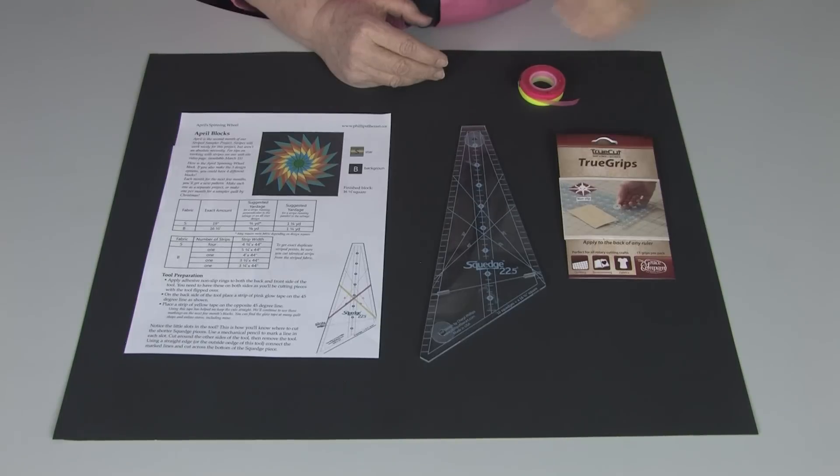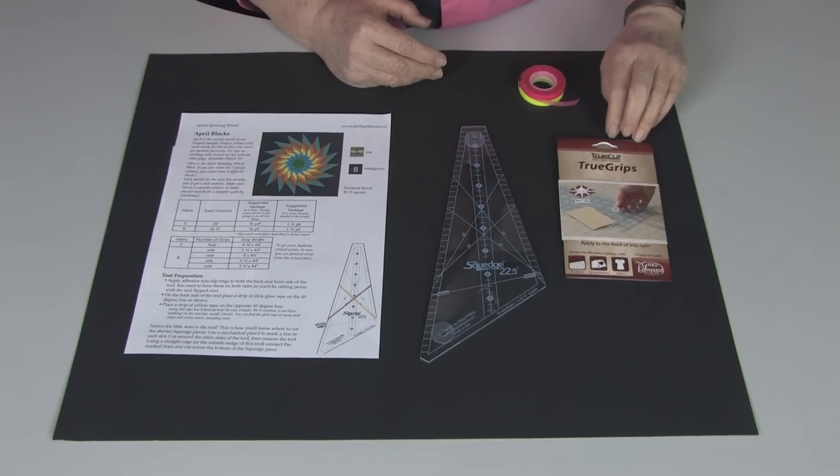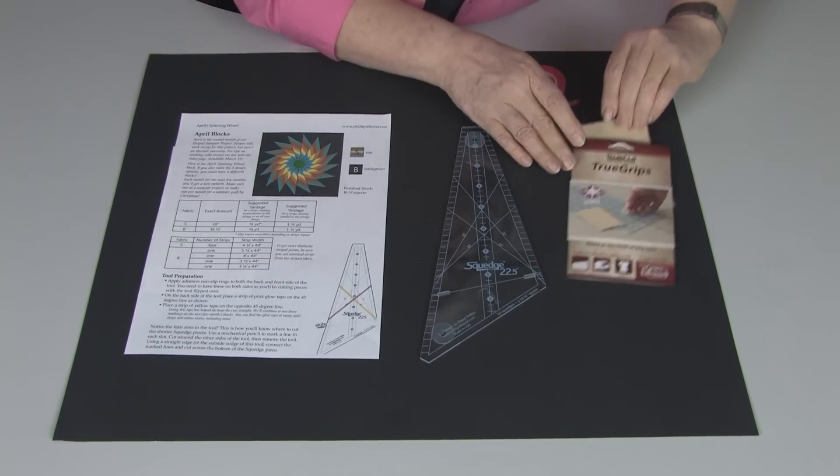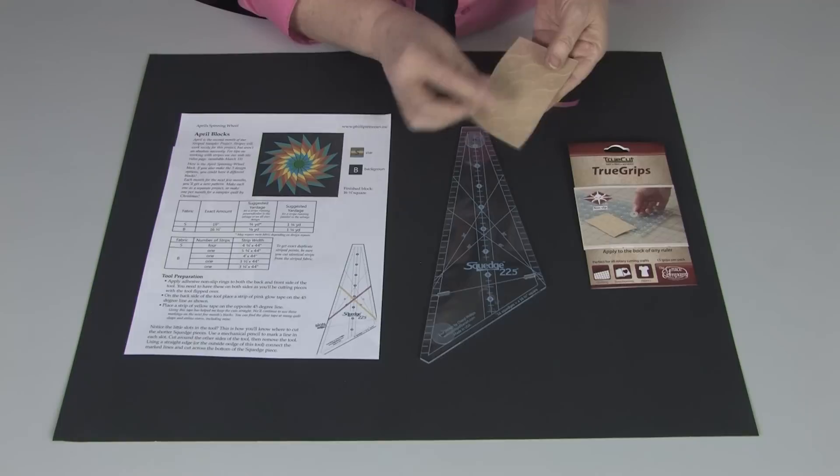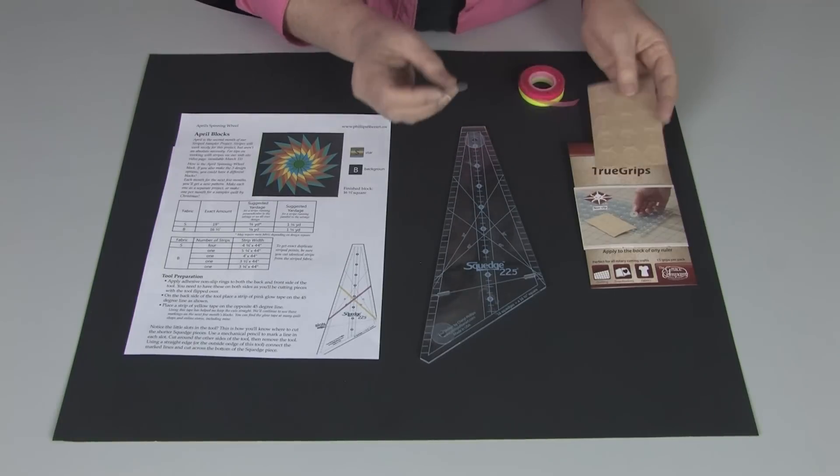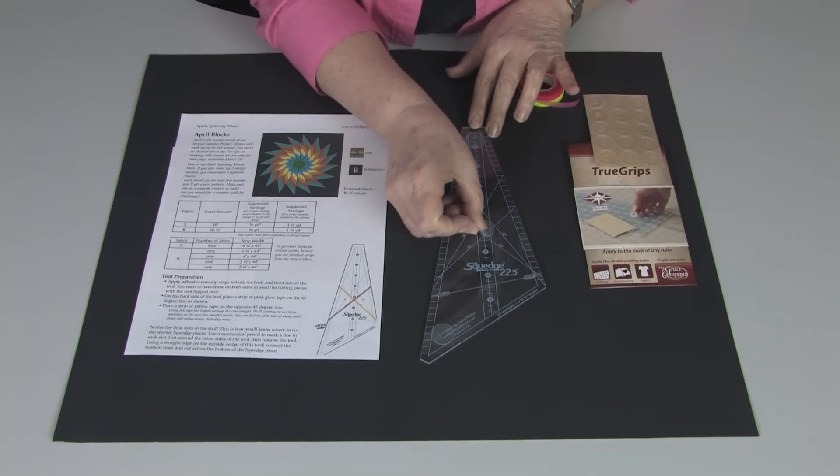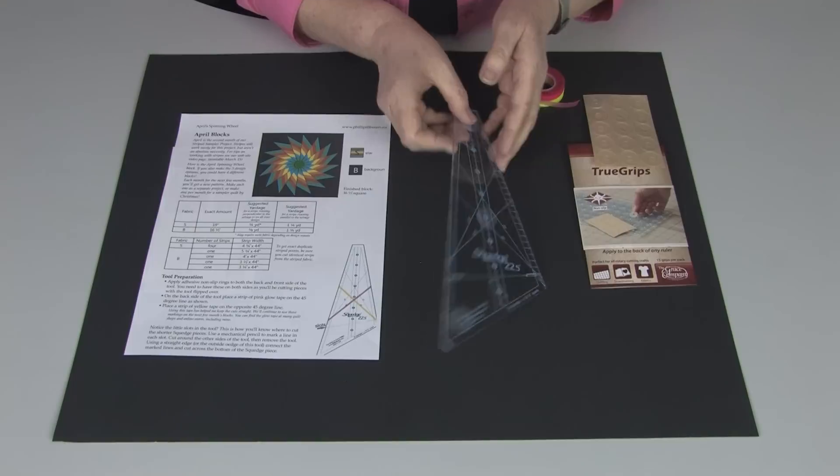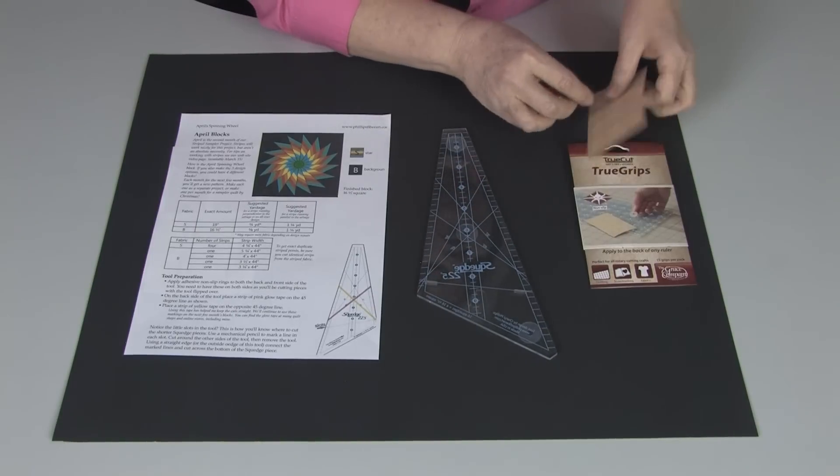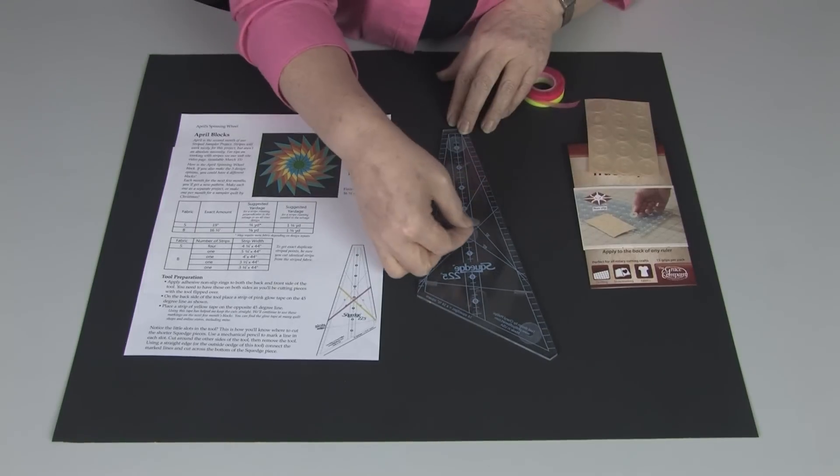We start with these adhesive rings. We're going to take the adhesive rings, peel one off. And we're going to put four on the front, and turn it over, and put four on the back.